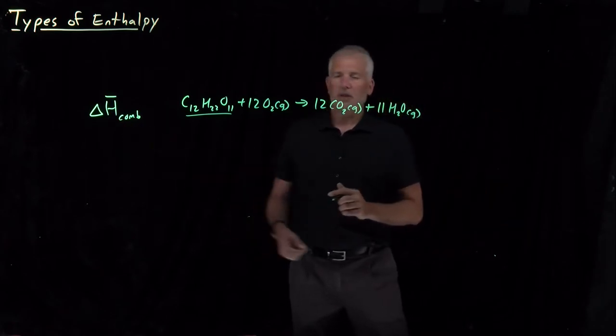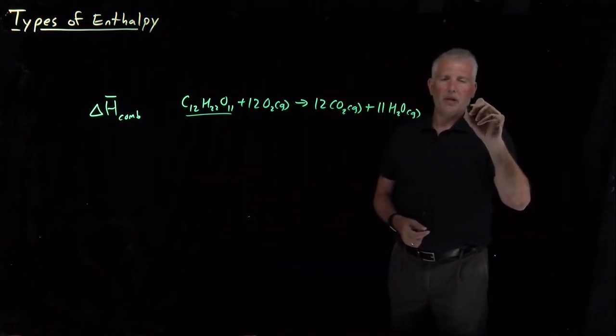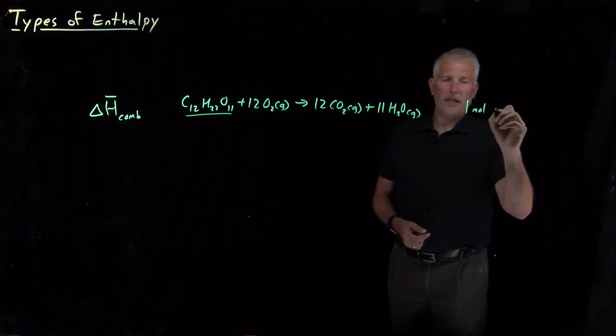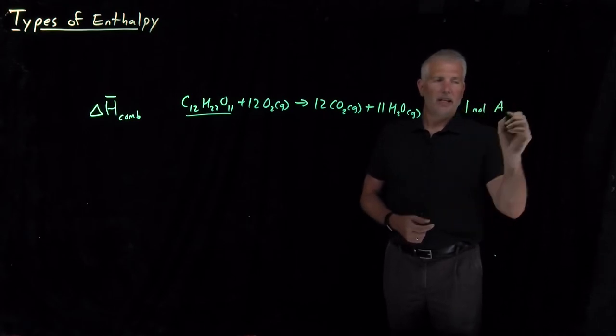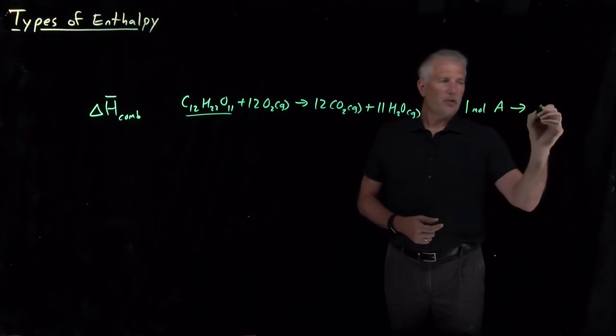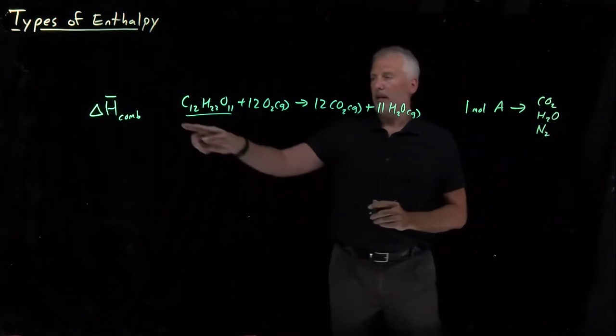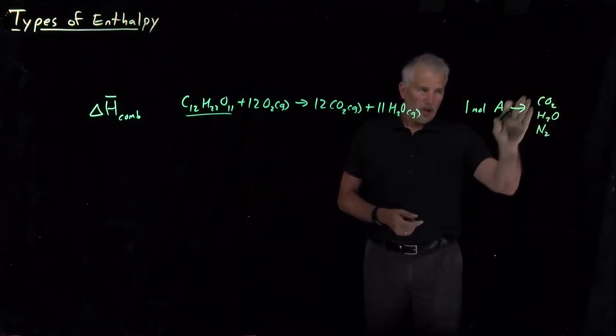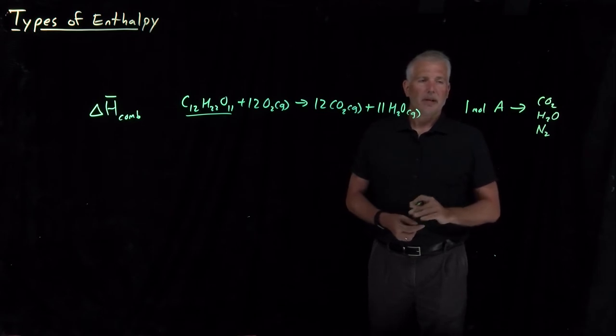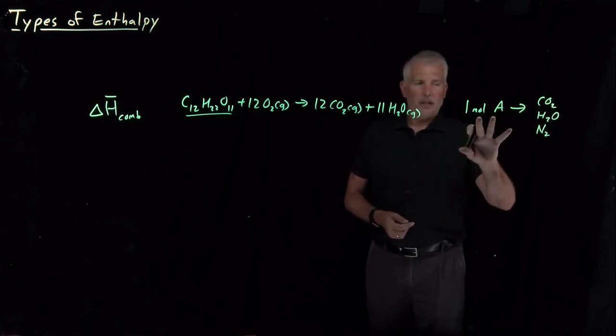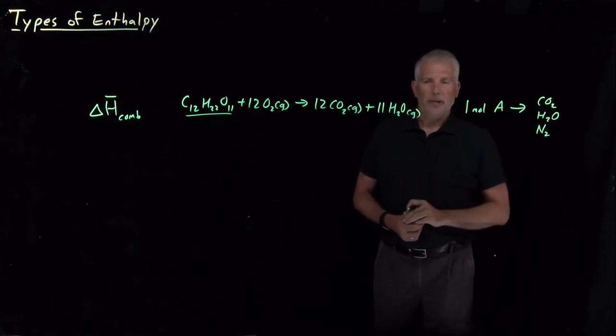In general, when we're talking about an enthalpy of combustion, that would be converting one mole of any reactant A into only carbon dioxide and H2O, and if there were any nitrogen atoms in this molecule, converting those into N2 in the products. That would be a more generic example of a combustion reaction.